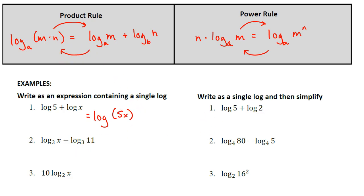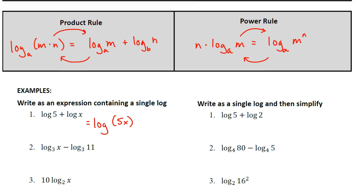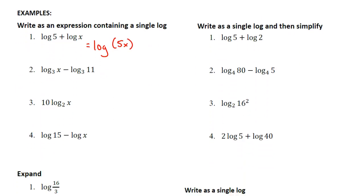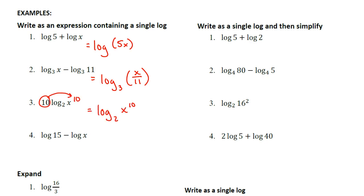Here we have log base 3 of x minus log base 3 of 11. This would be the quotient rule. Writing this as a single logarithm gives us log base 3 of the quantity x divided by 11. The order here is important — you want to take the first term divided by the second term, always. Now for number 3, I see a 10 in front of log base 2 of x. That 10 is an exponent for that value, so we would have log base 2 of x to the 10th power.